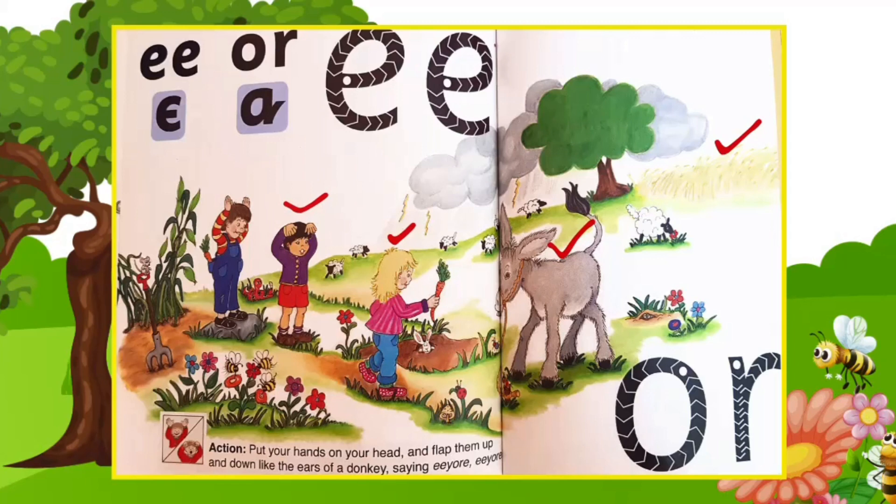One August morning, the children go for a walk to see the donkey. He brays happily E-O, E-O, E-O. Jakeem gives the donkey a carrot. The carrot comes from my garden, says Nora. I have carrots and sweet corn growing there.